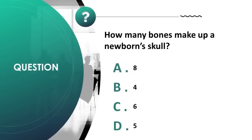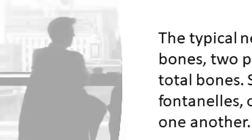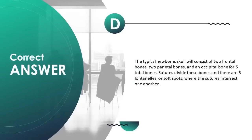How many bones make up a newborn skull? A) 8, B) 4, C) 6, D) 5. Correct answer is D. The typical newborn skull consists of two frontal bones, two parietal bones, and an occipital bone for five total bones. Sutures divide these bones and there are six fontanelles, or soft spots, where the sutures intersect one another.